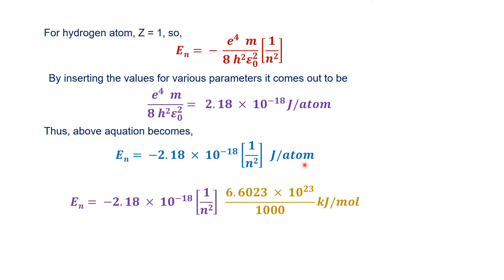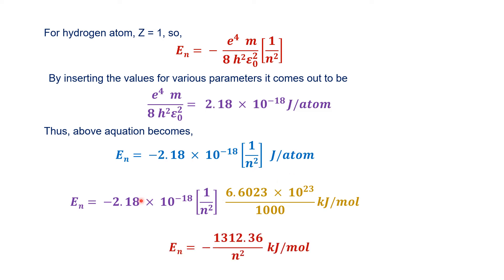The formula gives energy in joule per atom. If we convert to kilojoule per mole, we divide by 1000 to convert joule to kilojoule, and multiply by Avogadro's number since 1 mole has Avogadro's number of atoms. So En equals minus 2.18 × 10⁻¹⁸ × (1/n²) × 6.023 × 10²³ divided by 1000 kilojoule per mole. Multiplying these terms gives 1312.36 divided by n² kilojoule per mole.